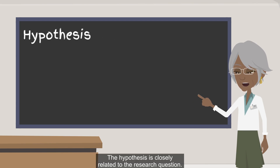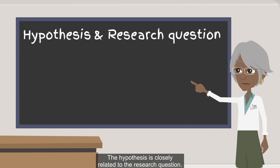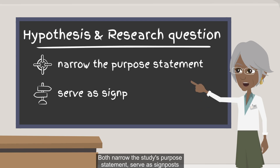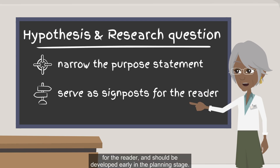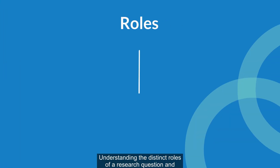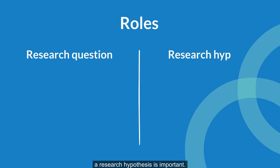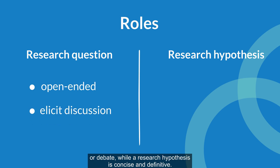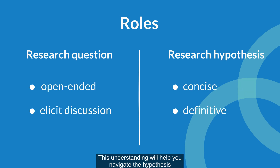The hypothesis is closely related to the research question. Both narrow the study's purpose statement, serve as signposts for the reader, and should be developed early in the planning stage. A research question is open-ended and designed to elicit discussion or debate, while a research hypothesis is concise and definitive. This understanding will help you navigate the hypothesis testing process more effectively.